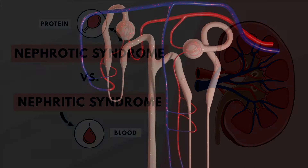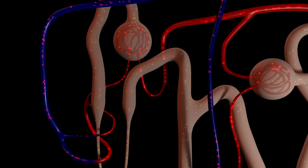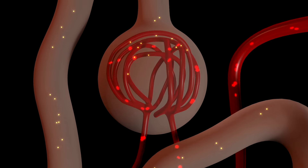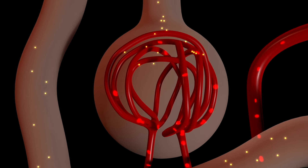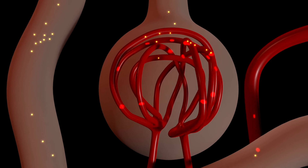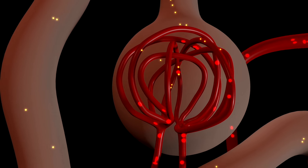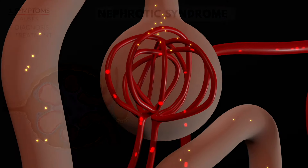The kidneys make urine by filtering the blood. Normally, no protein passes into the urine when the blood is filtered. This is because protein particles in the blood are too large to pass through the tiny holes of the glomerulus.